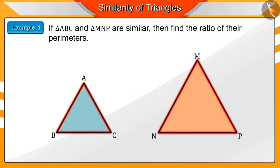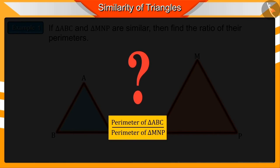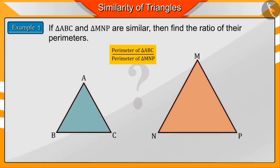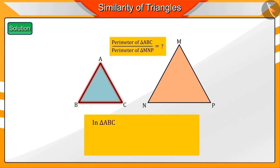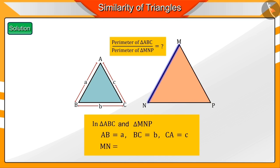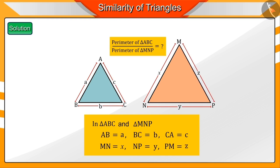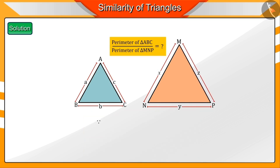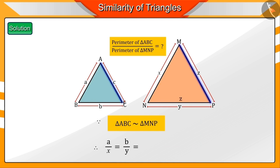If triangle ABC and triangle MNP are similar, find the ratio of their perimeters. Suppose in triangle ABC, AB is equal to a, BC is b, and CA is c. Also in triangle MNP, MN is equal to x, NP is equal to y, and PM is equal to z. Since triangle ABC and triangle MNP are similar triangles, their corresponding sides will be in the same ratio — let it be M.